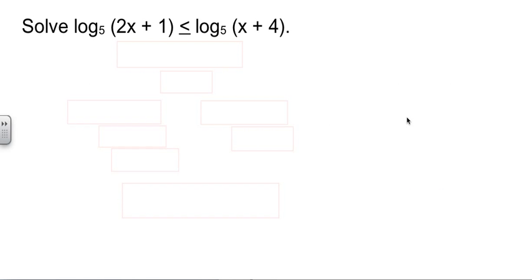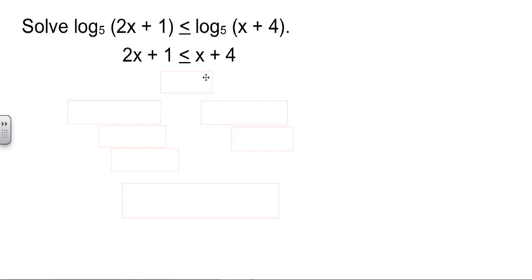The same ideas and the same rules apply when you're dealing with logarithmic inequalities. We have log base 5 on both sides, so log base 5 can cancel log base 5, and we get 2x plus 1 is less than x plus 4. Subtract the x over, subtract the 1 over, and x is less than or equal to 3.